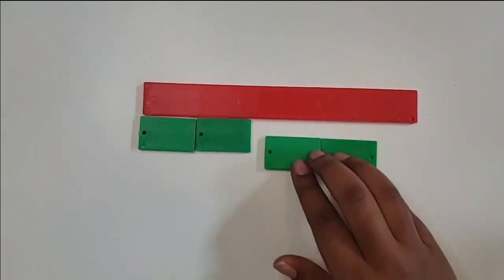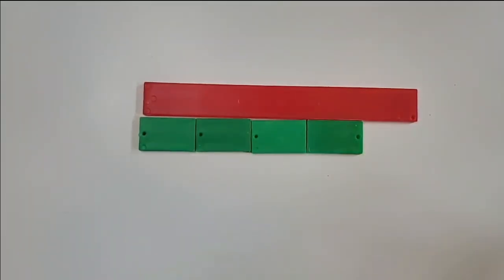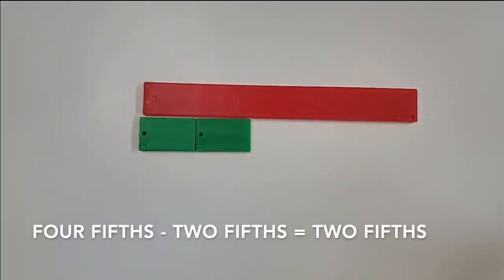So again there were four-fifths and I subtracted two-fifths and now there are two-fifths remaining. Four-fifths minus two-fifths equals two-fifths.